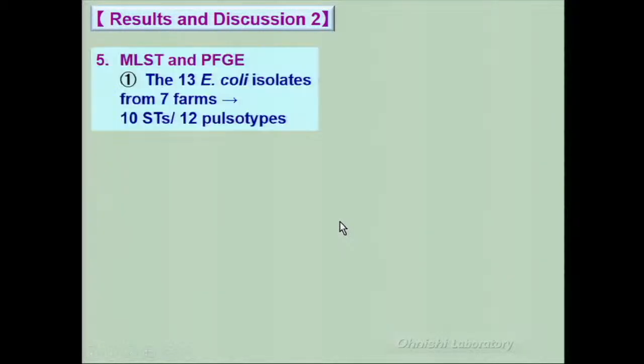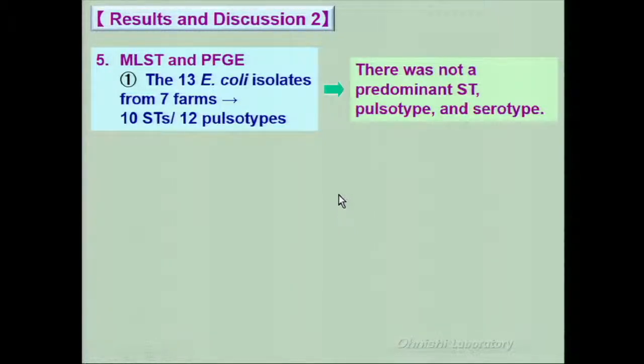Results and Discussion 2: MLST and PFGE. The 13 E. coli isolates from 7 farms belonged to 10 STs and showed 12 pulsotypes. There was not a predominant ST, pulsotype, and serotype.